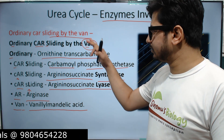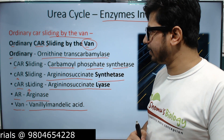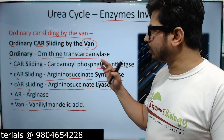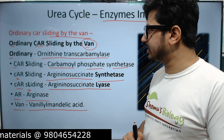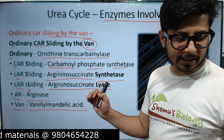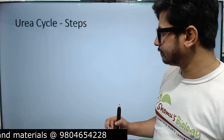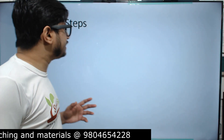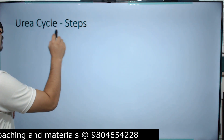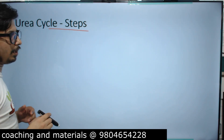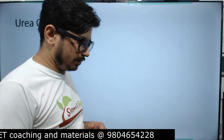Note: 'Van' full form here is Vanillin Mandelic Acid — that's the last one. So all these different enzymes are involved in the urea cycle. There are a total of six different enzymes listed.